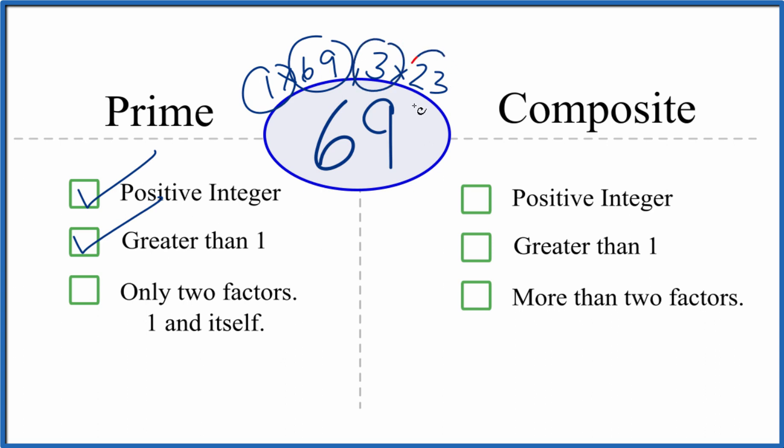There's one, two, three, four numbers that divide evenly into 69. So it is not a prime number.